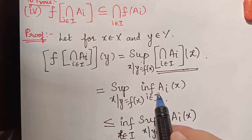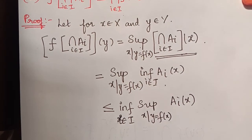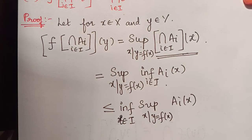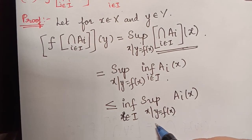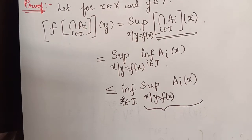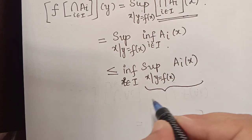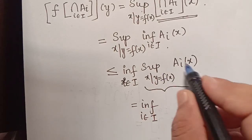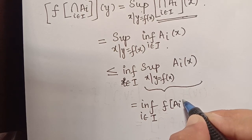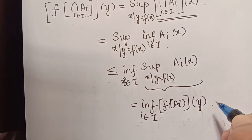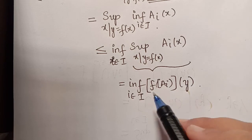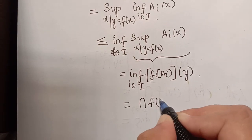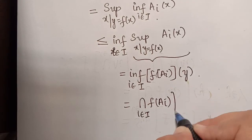The supremum of the infimum is a greater value of all the smallest values, while the infimum of the supremum is the smallest of the greater values — so the former is obviously less than or equal to the latter. Now, again by using the extension principle, the supremum of Ai of x such that y equals f of x can be replaced as f of Ai of y. So this becomes infimum over i an element of capital I of f of Ai of y. By the definition of fuzzy intersection, infimum of f of Ai equals intersection of f of Ai for i an element of capital I of y.